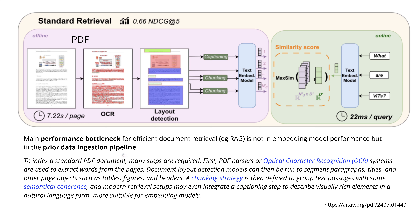You have to prepare the data for your LLM, for your RAG system, whatever you use. The standard retrieval for a particular benchmark is about seven seconds per page. You have an optical character recognition OCR system, then layout detection, then a specific chunking strategy where you define and group text passages with some semantic coherence together.